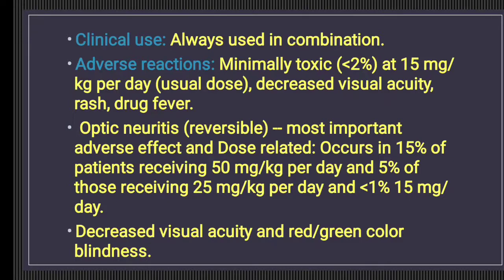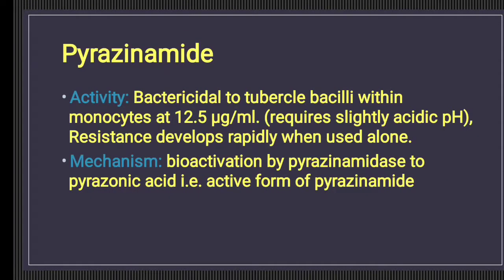Dose-related visual adverse effects occur in 15% of patients receiving 50 mg per kg per day, in 5% of those receiving 25 mg per kg per day, and in less than 1% at 15 mg per kg per day. Therefore, 15 mg per kg per day is the most suitable dose. Decreased visual acuity and red-green color brightness impairment are characteristic adverse effects. Ethambutol increases uric acid concentration and is therefore contraindicated in gout.